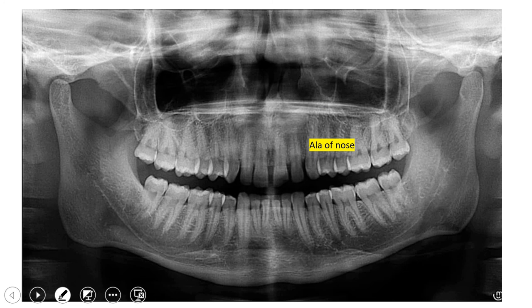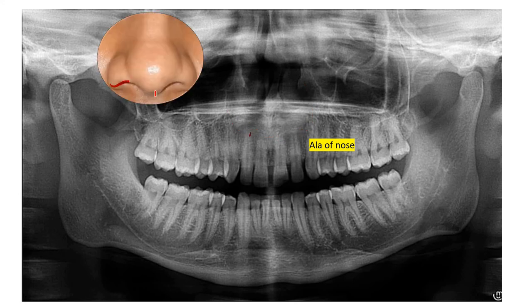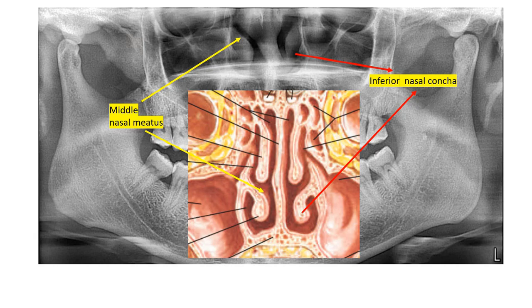The next structure that can be visualized in the radiograph is the ala of nose. A faint shadow can be seen at the center — that is the ala of nose. This is the ala of nose. The other nasal structures evident are: this is the inferior nasal concha on both sides, this is the nasal septum, and here you can see the middle nasal meatus — the space above the nasal concha is the middle meatus.